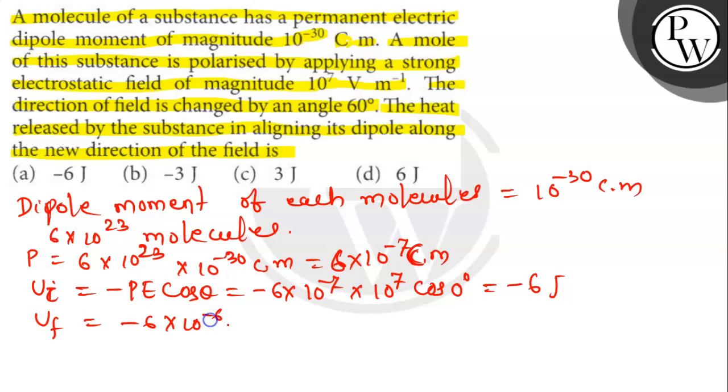The final potential energy Uf is equals to minus 6 into 10 to the power minus 6 into 10 to the power 6 into cos 60 degree, which is minus 3 joules.